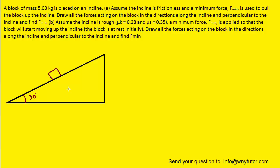In Part A, we are asked to draw all of the forces acting on the block in the directions along the incline as well as perpendicular to the incline. The most obvious force is the applied force being used to pull the block up the incline. We draw a force pointing up the incline and label it Fmin, which is directed along the incline.